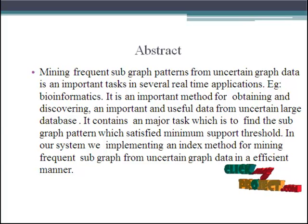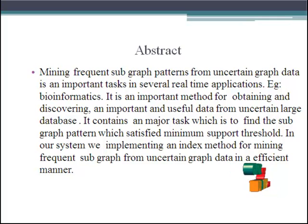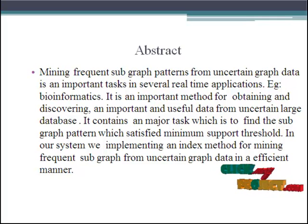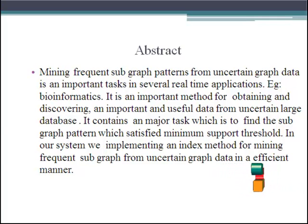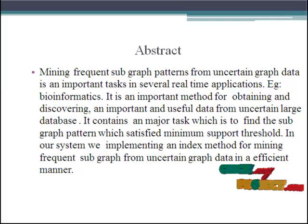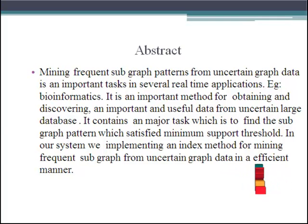For example, Bioinformatics. It is an important method for obtaining and discovering useful data from uncertain large databases. It contains a major task: to find the subgraph pattern which satisfies the minimum support threshold. In our system, we are implementing an index method. The index is used to reduce the number of comparisons required for computing the expected support of each candidate pattern. It also enables additional optimization with respect to scheduling and early termination, which further increases the efficiency of the method.